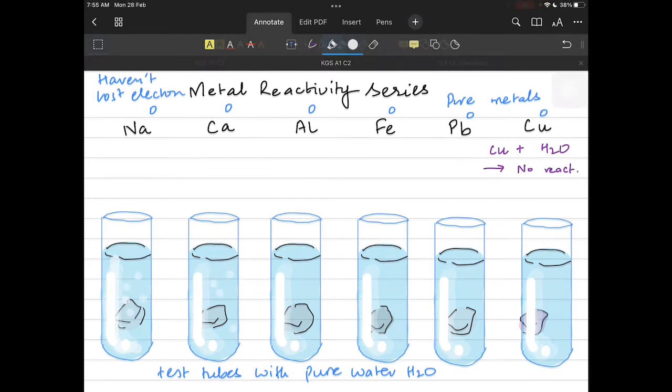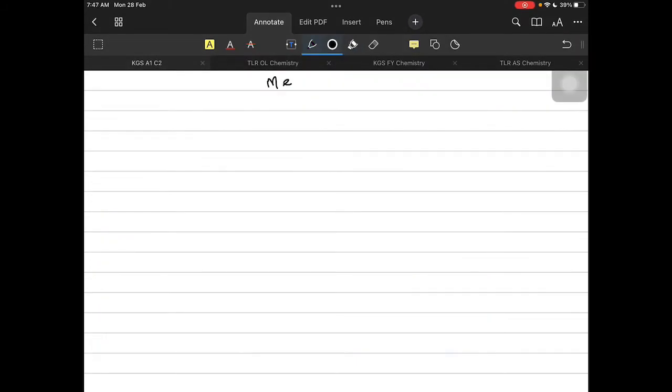Now if you pour all these metals in the test tubes what will be the observation? You're going to see bubbles of colorless gas but you're going to see these bubbles at different rates from different test tubes. The one with sodium is going to release bubbles really quickly but copper doesn't release bubbles at all. So what's this all about?